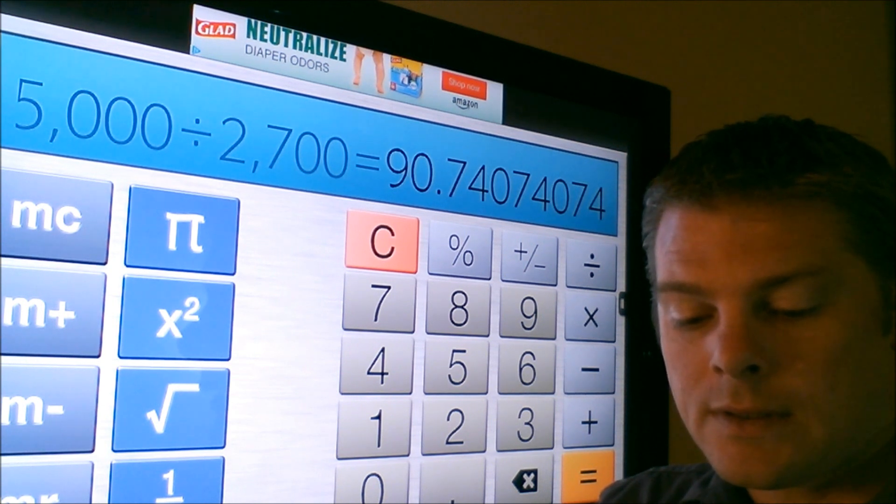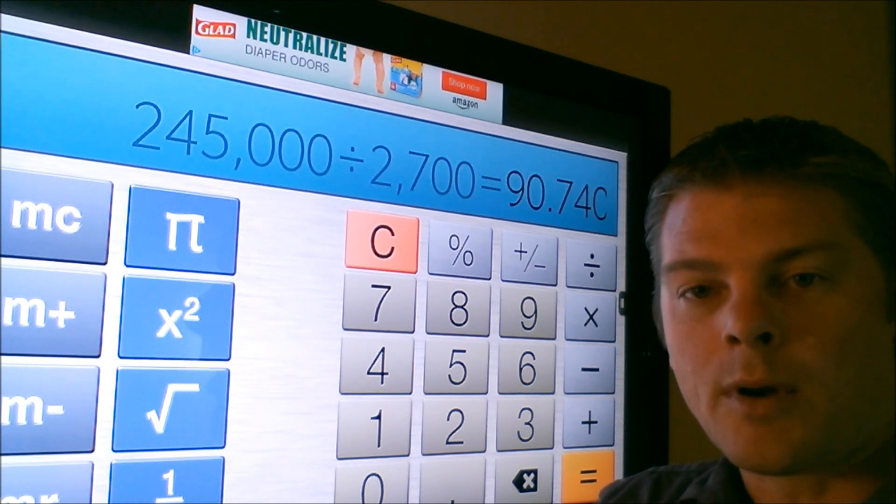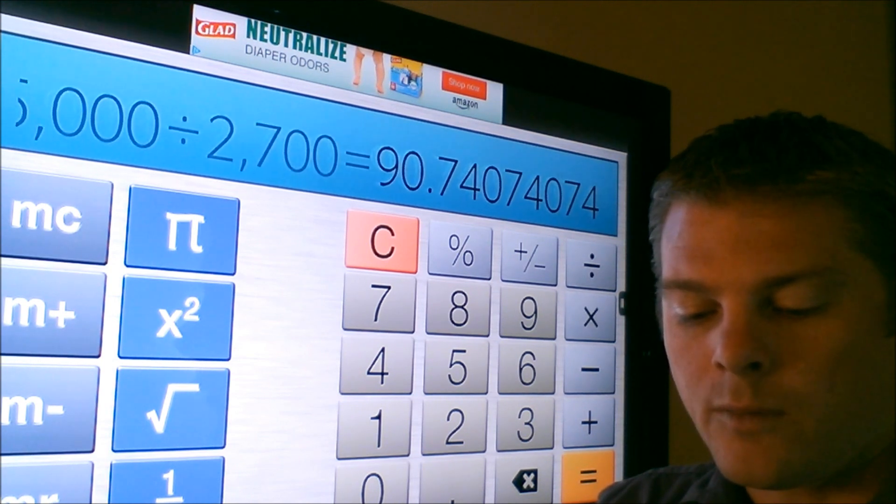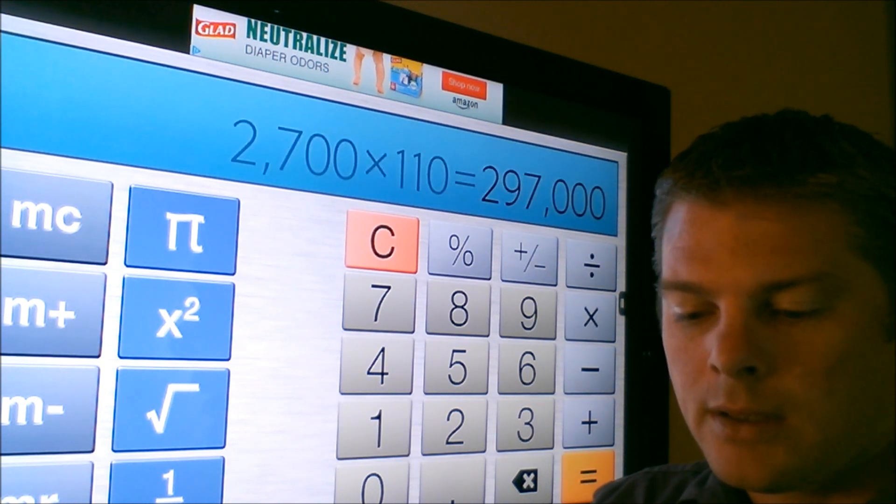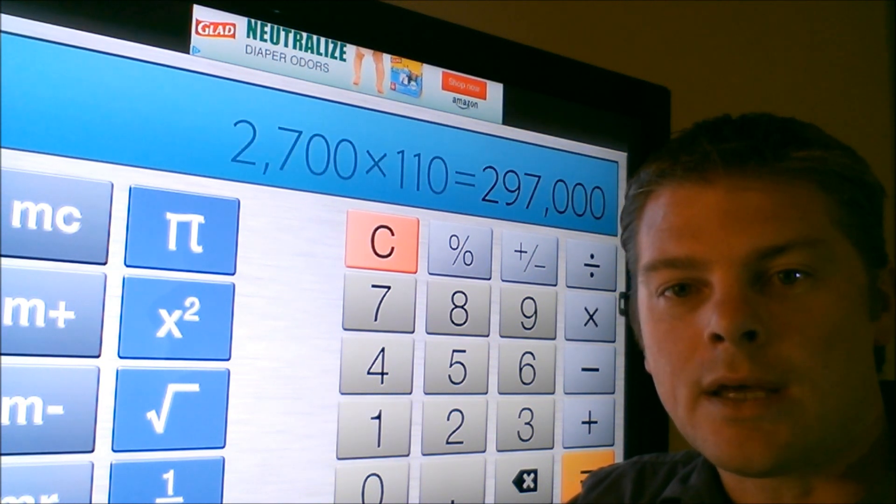So once again, that was, we had the price of $245,000, right? Now if we remember that, now it says 2,700 square foot times the price per square foot is $110. It's worth $297,000.